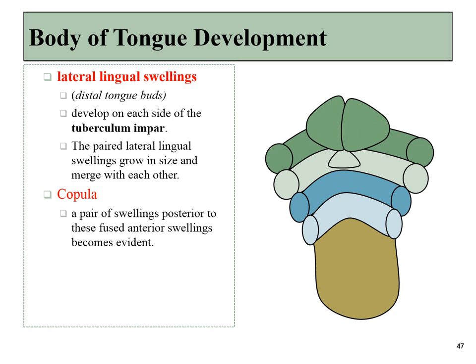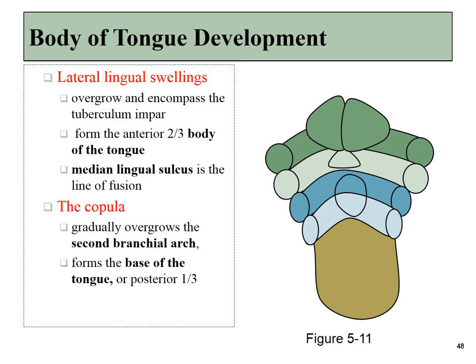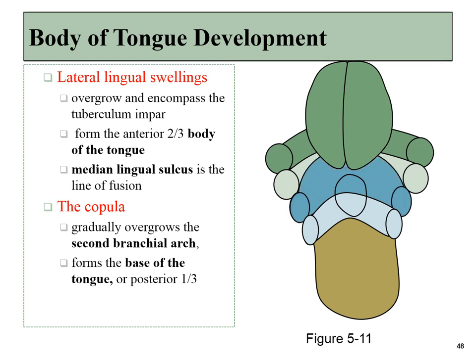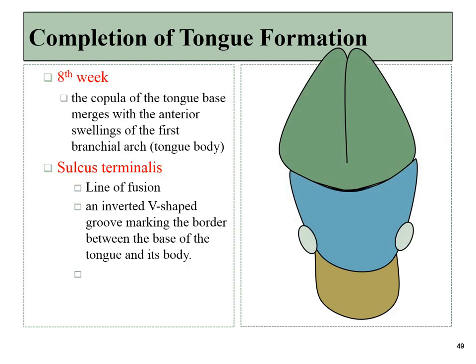At roughly the same time, another swelling called the copula develops posteriorly to the tuberculum impar, around branchial arches three and four. The lateral lingual swellings will grow in size and fuse, forming the anterior two-thirds, or the body of the tongue. Where they fuse along the midline will form the median lingual sulcus. The copula, on the other hand, overgrows the second branchial arch and forms the base of the tongue, or the posterior one-third. The two will fuse together, and where they do leaves a demarcation called the sulcus terminalis — the v-shaped line between the body and the base of the tongue.